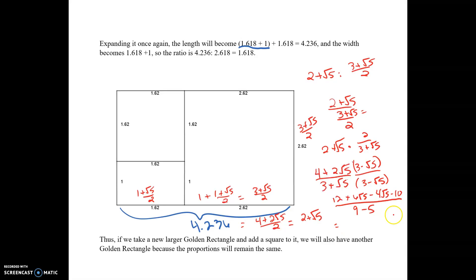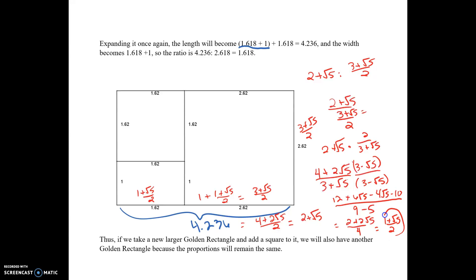Combining all like terms on the top gives 2 + 2√5, all over 4. Dividing everything by 2, we get (1 + √5) / 2, which is phi again.